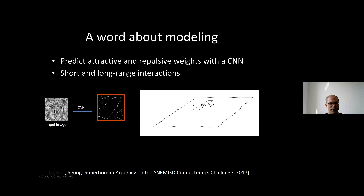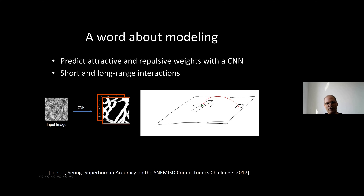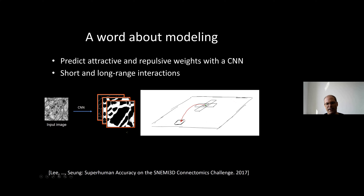Given an input image, we can ask for each pixel whether it belongs to the same segment as an adjacent pixel. If we have ground truth partitioning, we can train a neural network to give us this kind of prediction. For example, we ask about a vertical edge, or a longer range interaction in another direction. If you have dense ground truth, you can conveniently train a network to output a bunch of images representing different range interactions. These output images are the weights used in the graph partitioning problem.